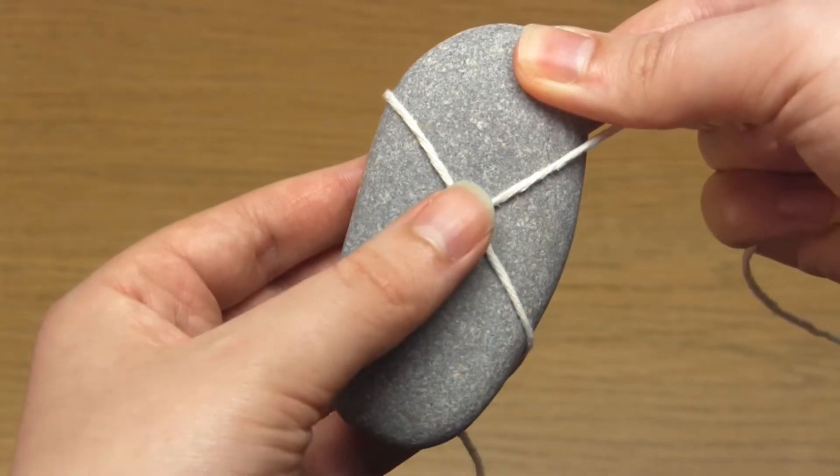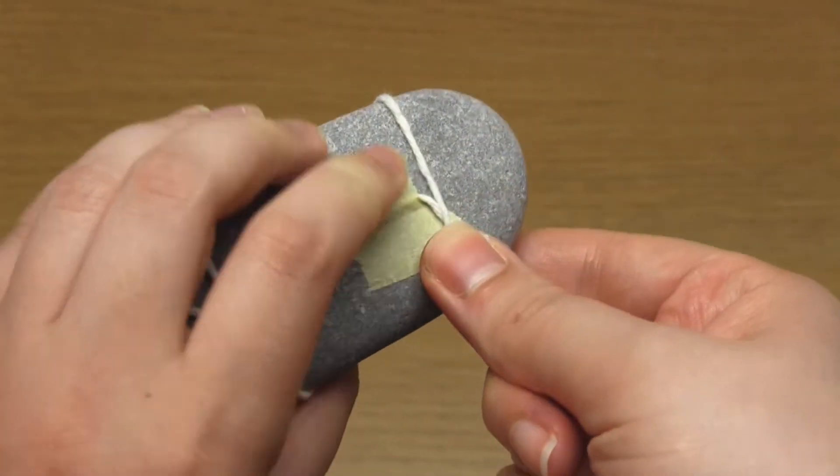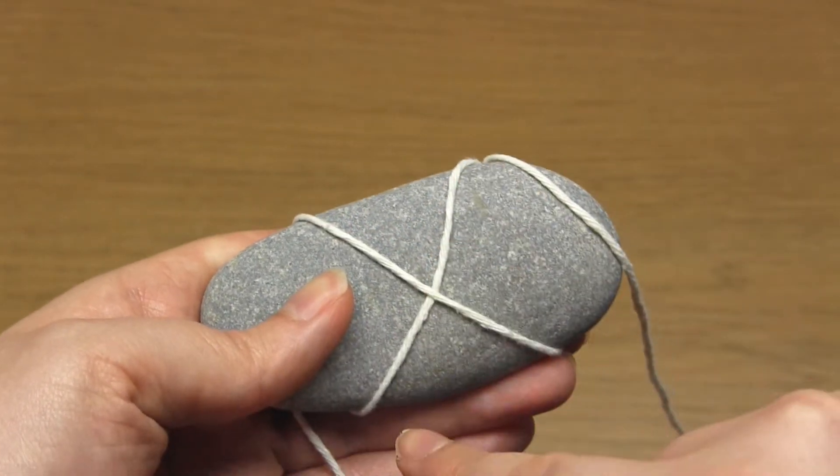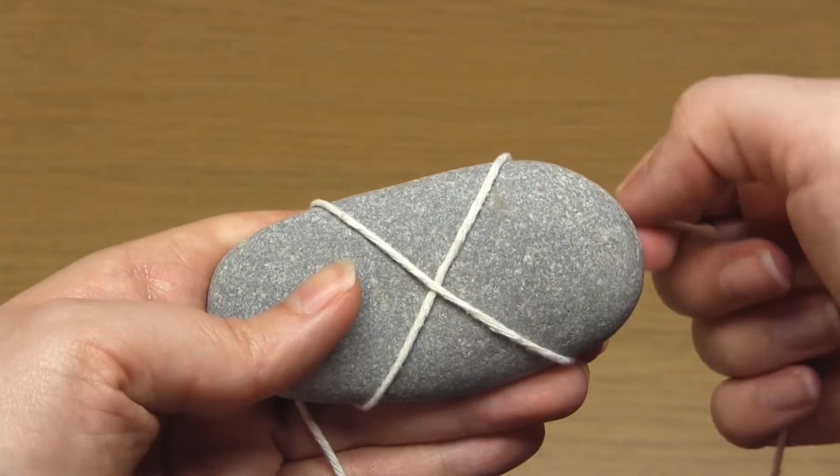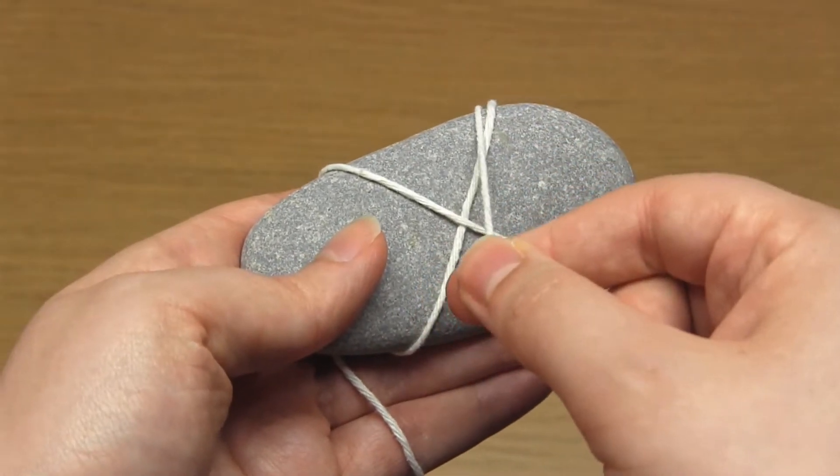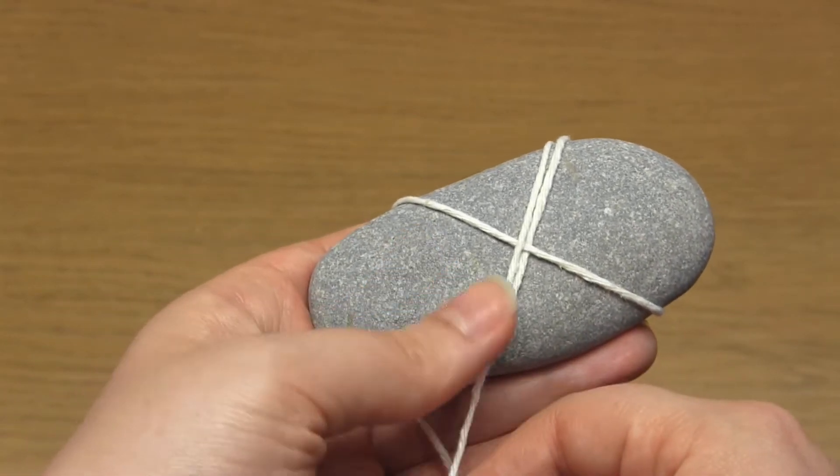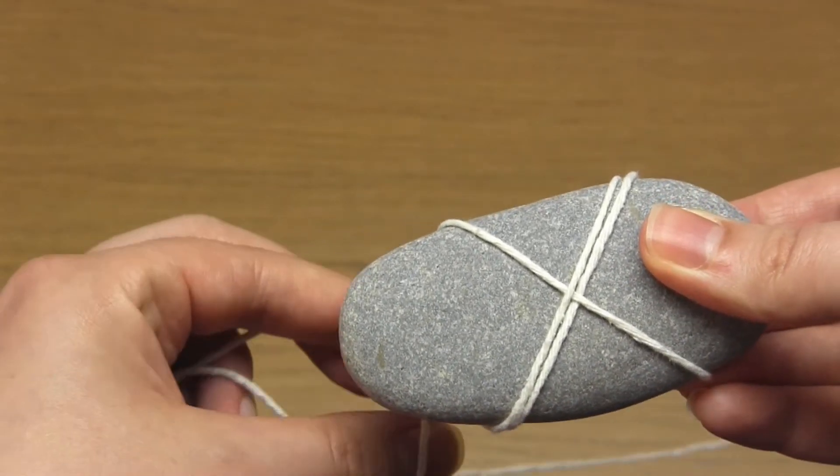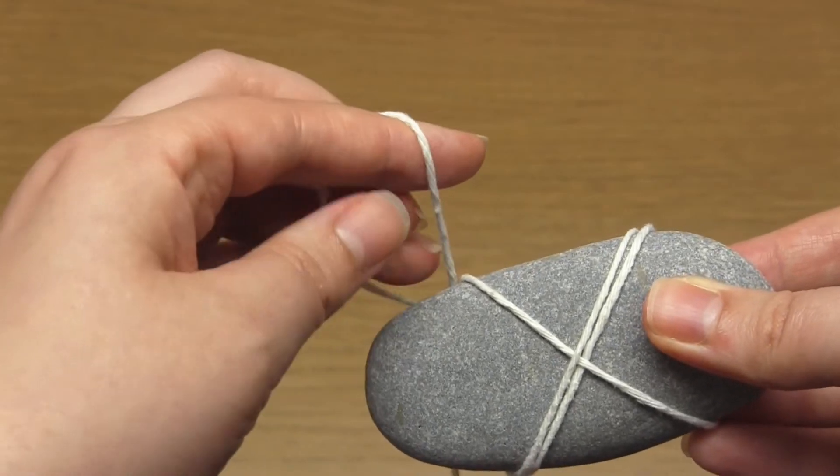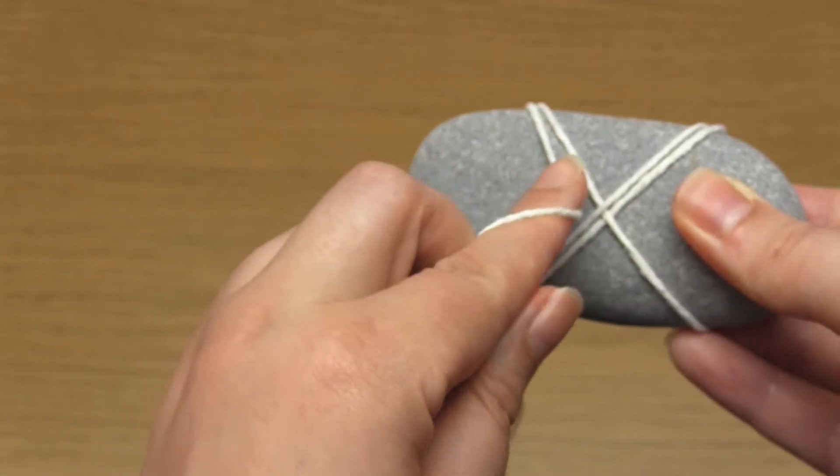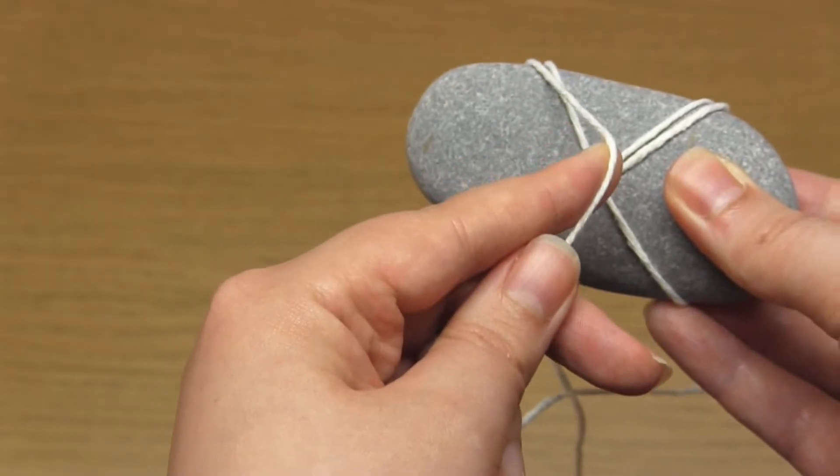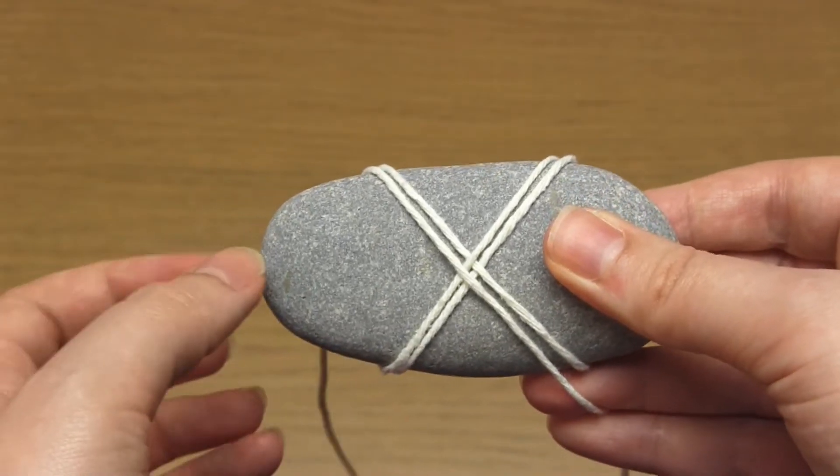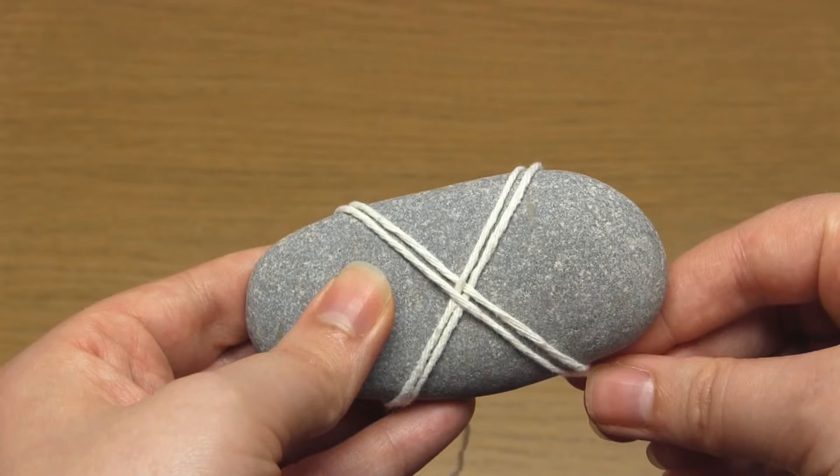You want this yarn to the front of the pebble and then you want to go inside the first V and outside the second V. Like so. Then take it straight across under the pebble and then diagonally across the front again. This time the yarn needs to be outside the first V and then inside the second V. You then take the yarn straight across under the pebble again and then just repeat these steps.